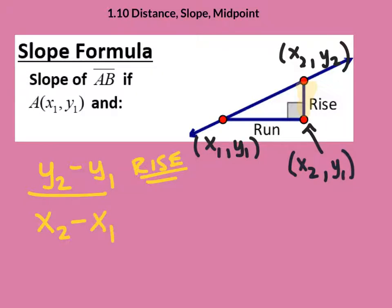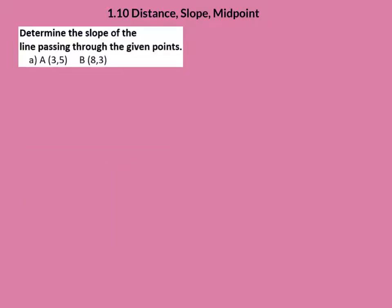Now students will often worry, who's X1 and who's Y1 and so on? Who's the X2? Who's point one? Who's point two? It honestly does not matter. But whoever you name to be point one has to be that for X and Y and same with the Y values.